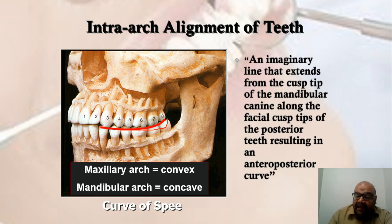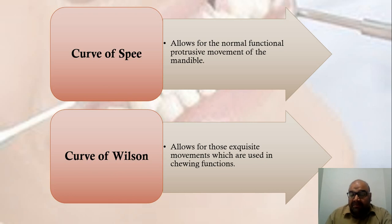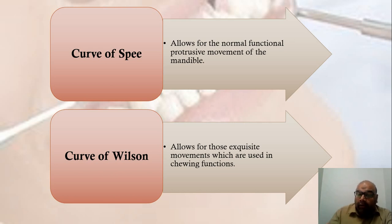The curve of Spee is a curvature found in the anterior-posterior direction, starting from the tip of the canine to the last standing molar. It is convex in the maxillary arch and concave in the mandibular arch. Functionally, due to this curvature in the anterior-posterior direction, the curve of Spee allows for normal functional protrusion — when we move the mandible forwards — which is needed during chewing of food.